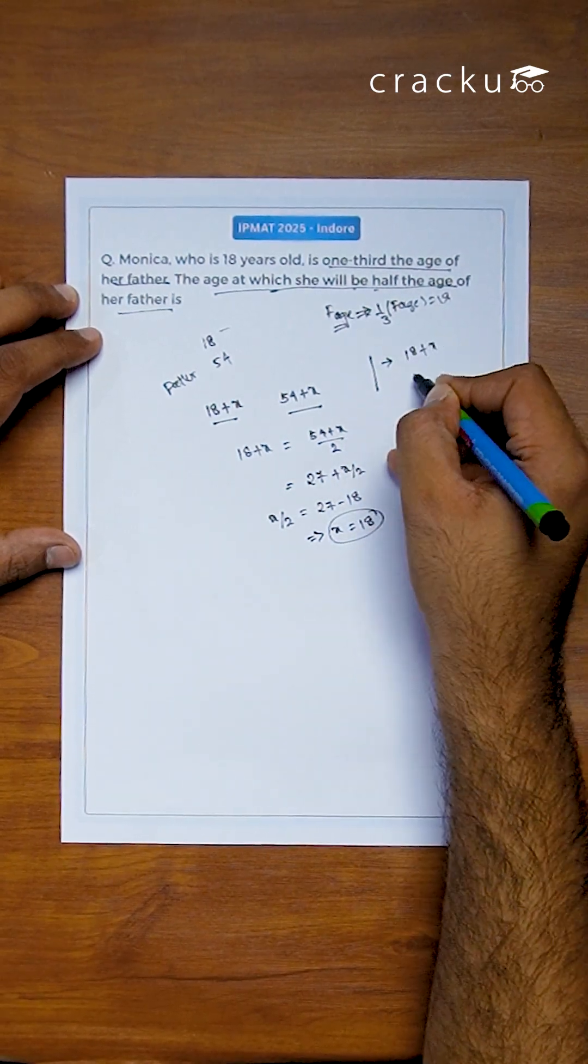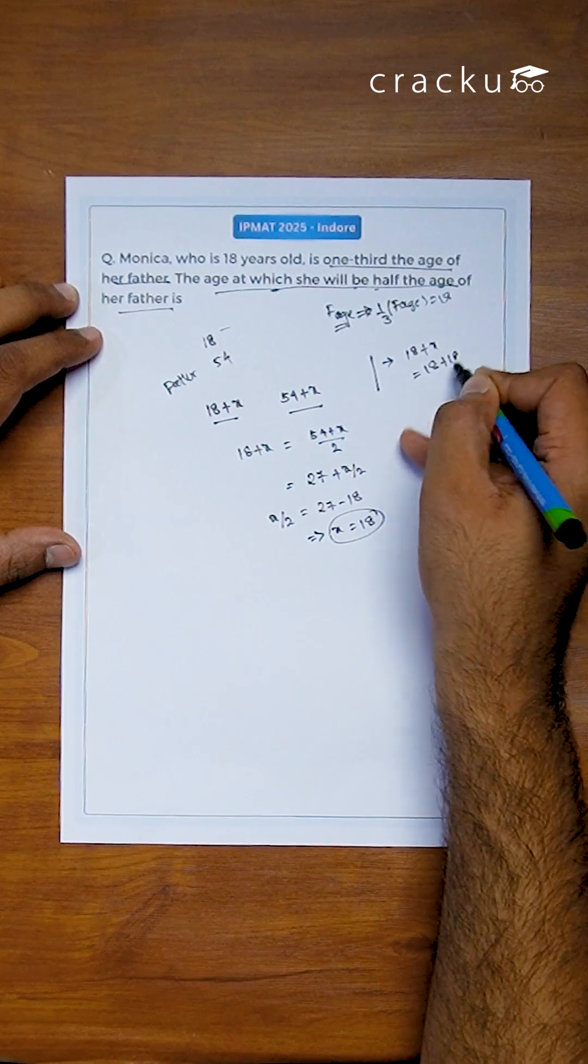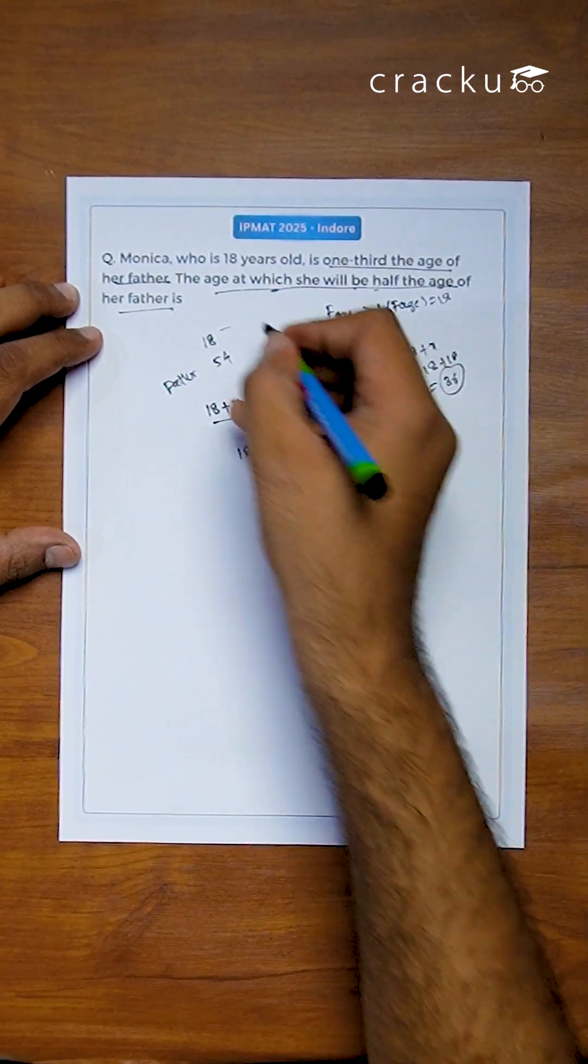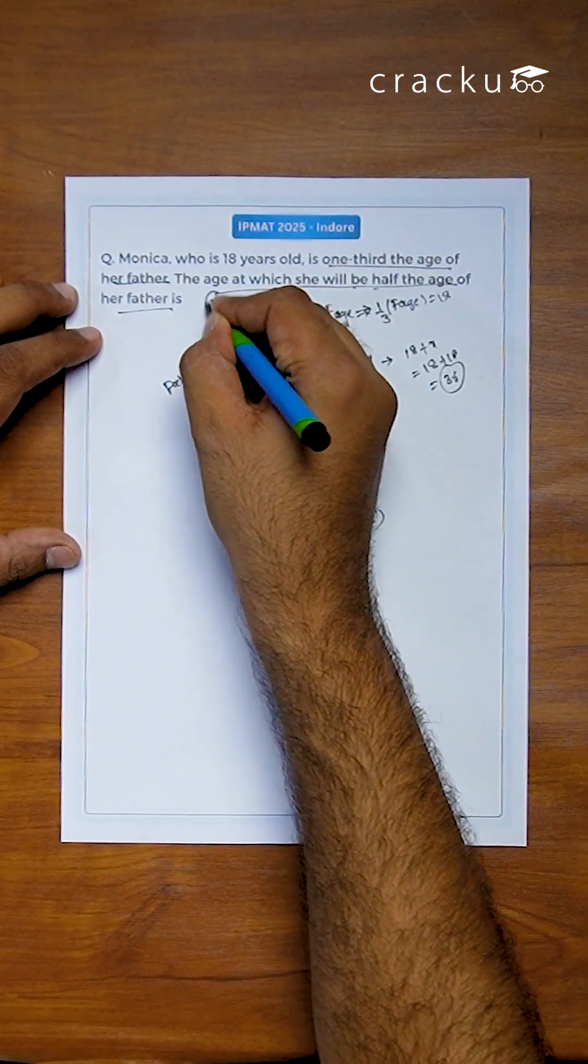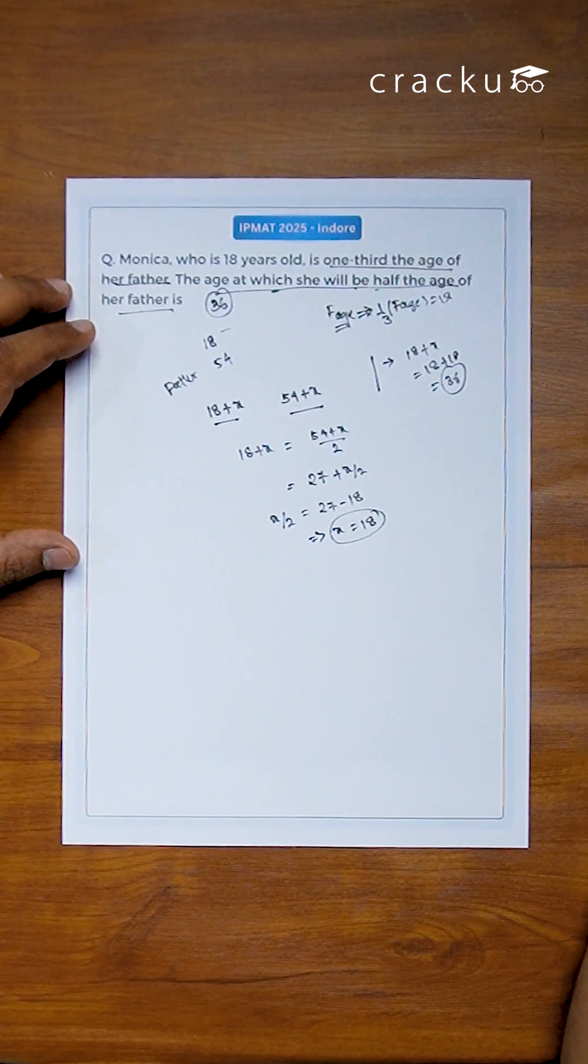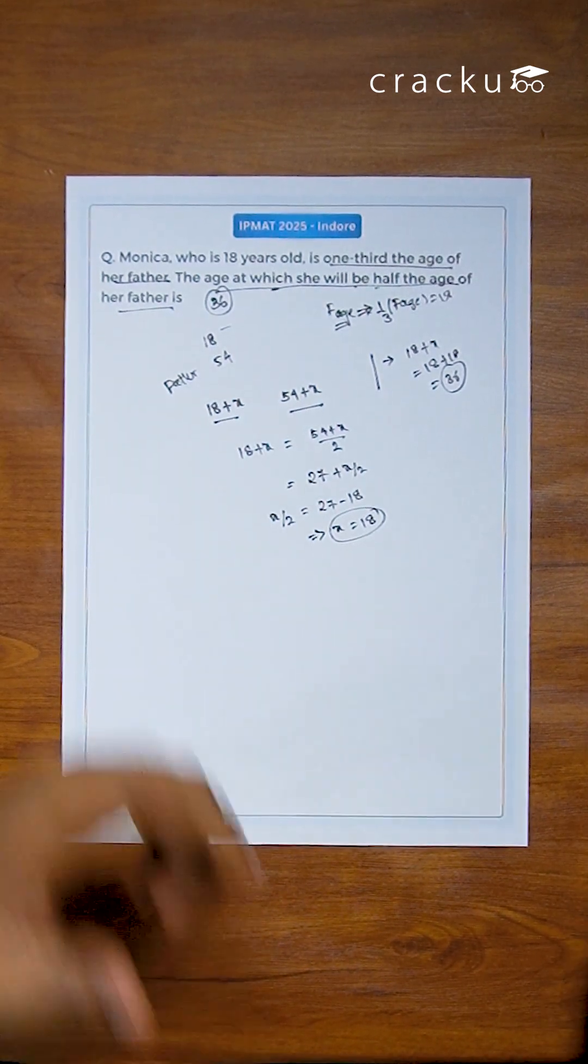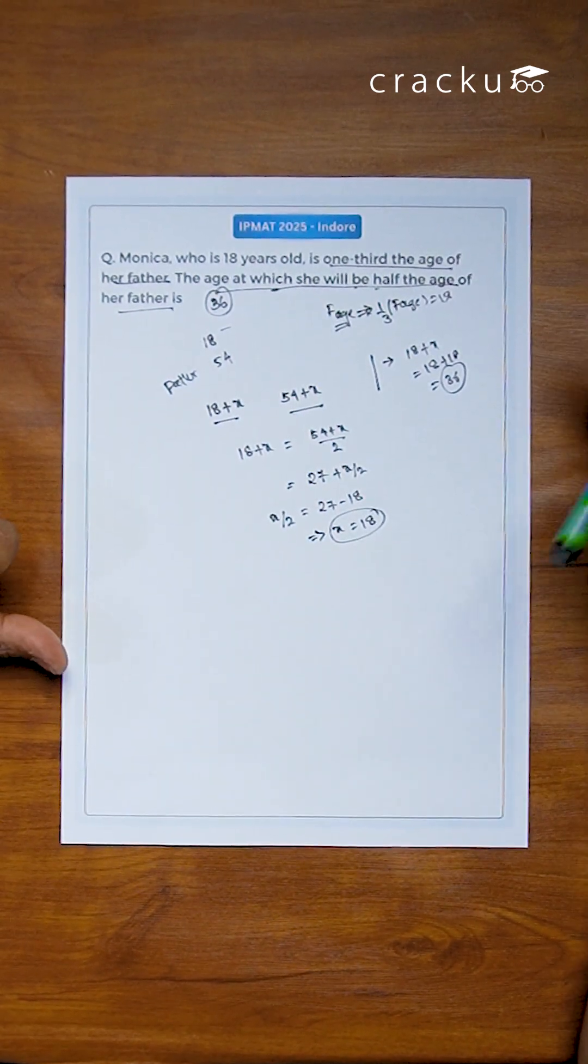At the age at which she will be, so that means age at which is nothing but 18 plus x, which is 18 plus 18, which equals 36. So when Monica is 36, her father's age, half age of her father would be 36. That is what the question is, that's it.